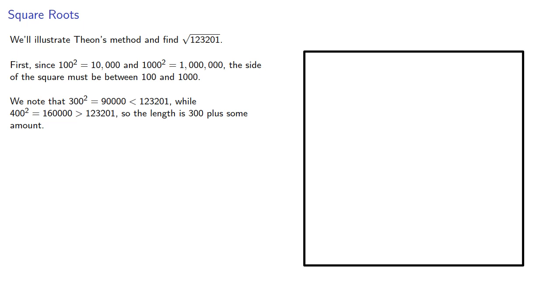We note that 300² = 90,000, which is smaller, while 400² = 160,000, which is larger, so the length of the square is 300 plus some amount.